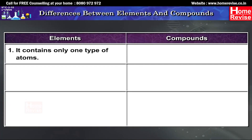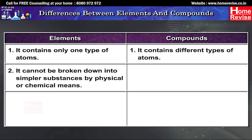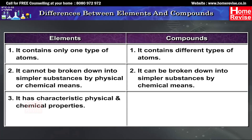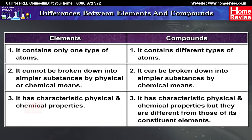Differences between elements and compounds: 1. An element contains only one type of atoms, while compounds contain different types of atoms. 2. Elements cannot be broken down into simpler substances by physical or chemical means. 3. A compound has characteristic physical and chemical properties that are different from those of its constituent elements.